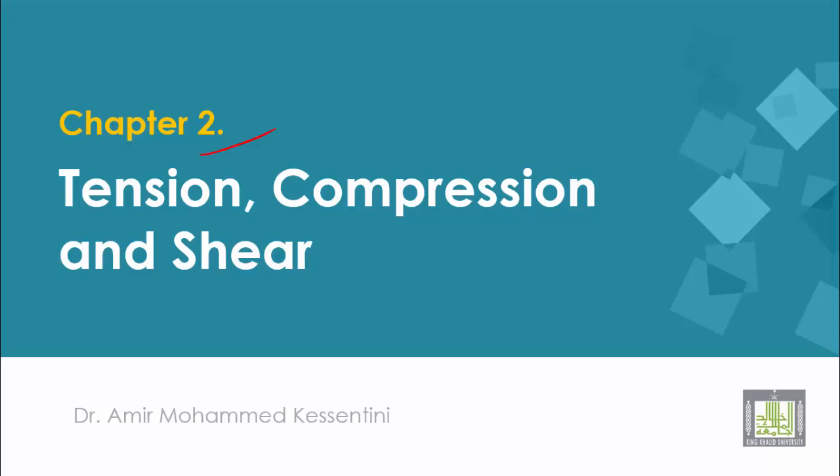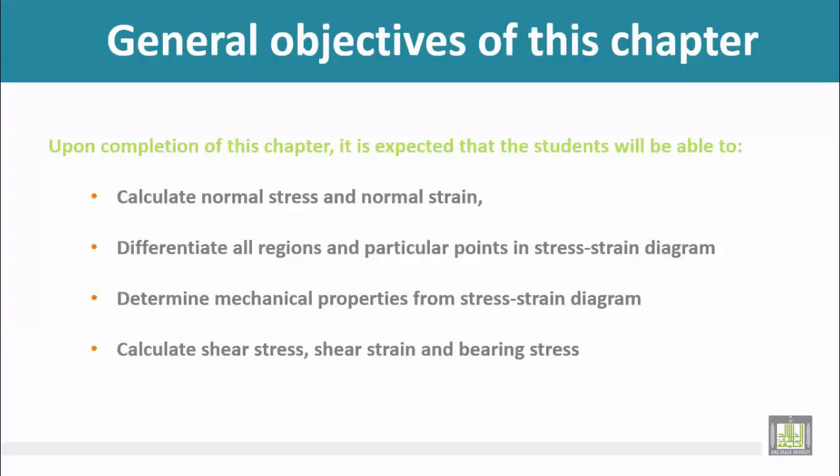The general objectives of this chapter are as the following: Upon completion of this chapter, it is expected that the students will be able to calculate normal stress and normal strain, to differentiate all regions and particular points in stress-strain diagram, to determine mechanical properties from stress-strain diagram, and finally to calculate shear stress, shear strain and bearing stress.